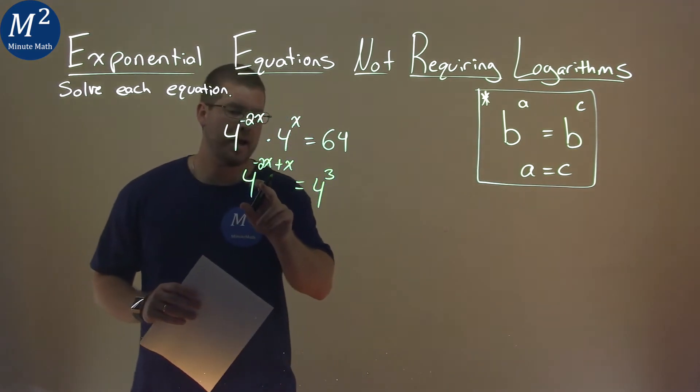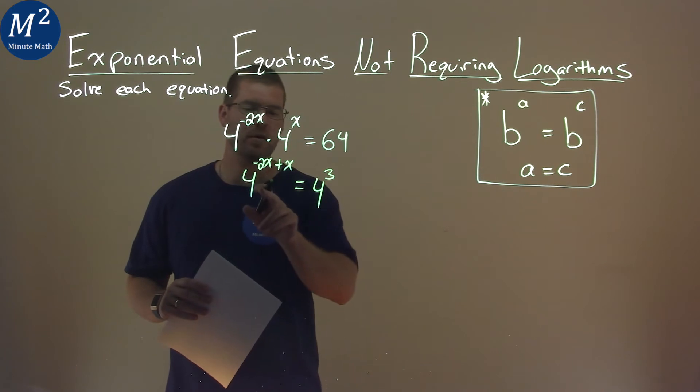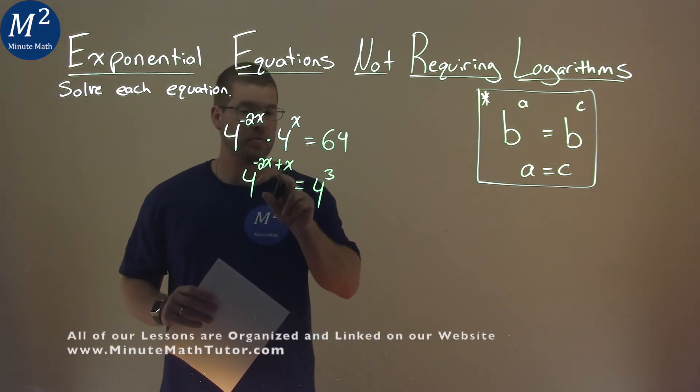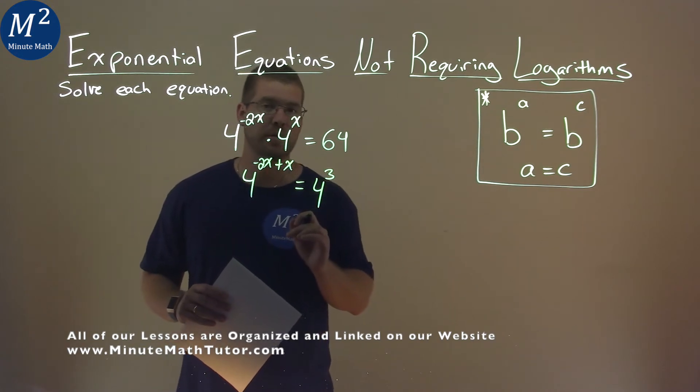Now, we have 4 and a 4. We have the same base on either side of the equal sign. When that happens, we can set the exponents equal to each other and solve.